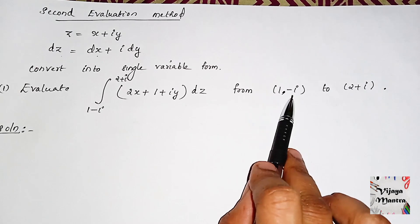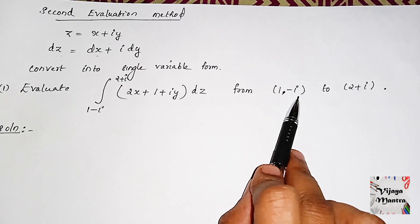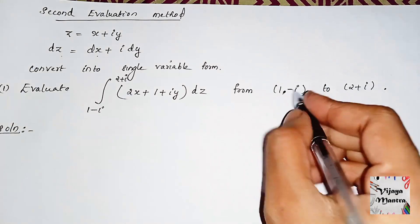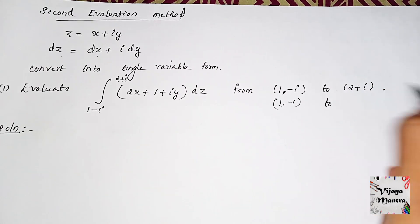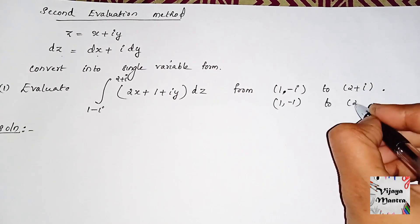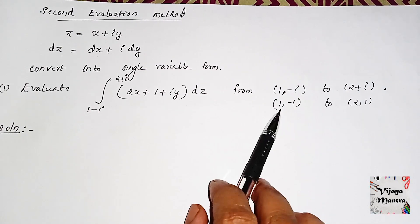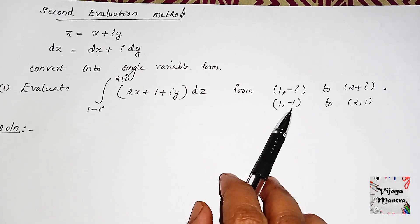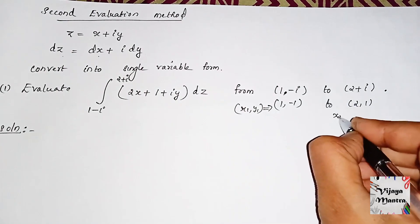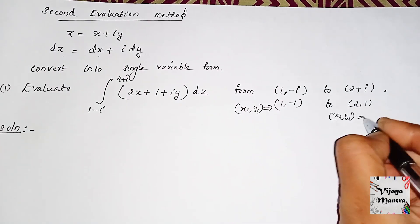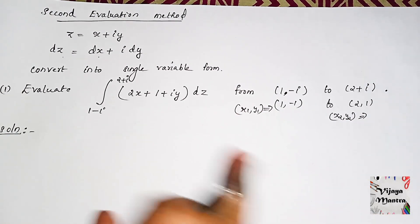We will write the values and the ordered pair. We will write the coordinates: (1, minus 1) and (2 plus i). We assign x1, y1, x2, y2. So x1, y1 equals 1, minus 1. And x2, y2 equals 2, 1. We will write the integral value.